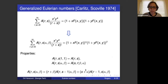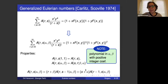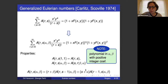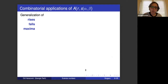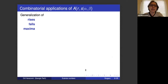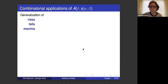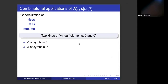The obvious properties are that at alpha = beta = 1 we recover the numbers A(r,s), and the symmetry relation gives A(r,s,alpha,beta) = A(s,r,beta,alpha) — flipping r,s and flipping alpha,beta. These numbers satisfy a recurrence relation, from which we can see that the numbers are polynomials in parameters alpha and beta with positive integer coefficients. Since we have positive integer coefficients, we again seek a combinatorial interpretation.